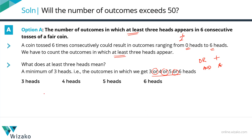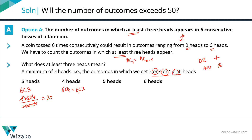Number of outcomes with 3 heads in 6 tosses: that's 6C3 = 6×5×4 / (1×2×3) = 20 outcomes. For 4 heads, it's 6C4, which equals 6C2 using the identity NCR = NC(N−R). 6C2 = 6×5 / (1×2) = 30/2 = 15 outcomes.